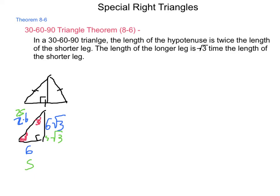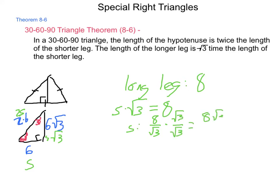Let's find the other sides if we know one piece. If the long leg of a 30-60-90 triangle is 8, what are the other sides? The long leg is S × √3 = 8. To get S by itself, I divide by √3: S = 8/√3. I can't have square roots in the denominator, so I multiply by √3/√3, giving me S = 8√3/3.